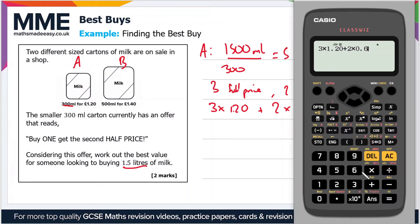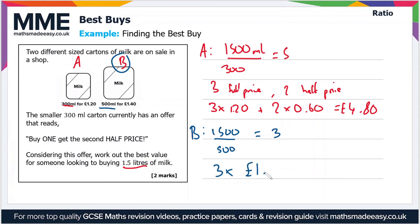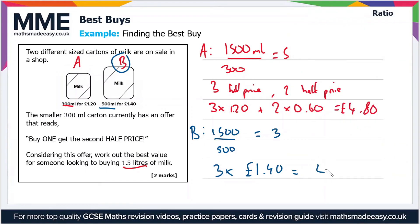Now for Brand B: we need 1,500 divided by 500, which is 3 cartons. The price per carton is £1.40, so 3 × £1.40 gives us £4.20. So the price with Brand A was £4.80 and the price with Brand B was £4.20, therefore Brand B is the cheaper option.